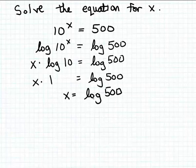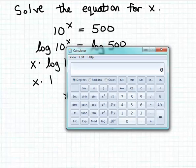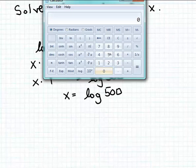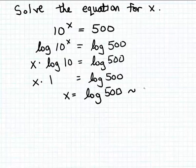Now, if you like, you can approximate log of 500 using a calculator. So let me pull up here the Windows calculator and we're going to estimate the log of 500. So I just key in here 500 and then press the log key. And so the common log or log base 10 of 500 is approximately 2.698. So if we round off to a couple of decimal places, that's going to be about 2.70.